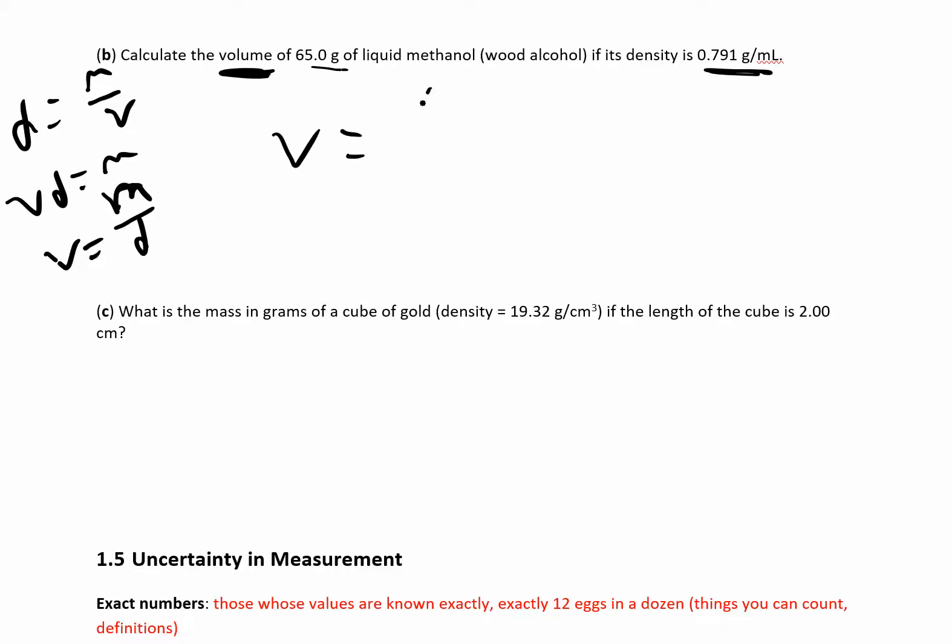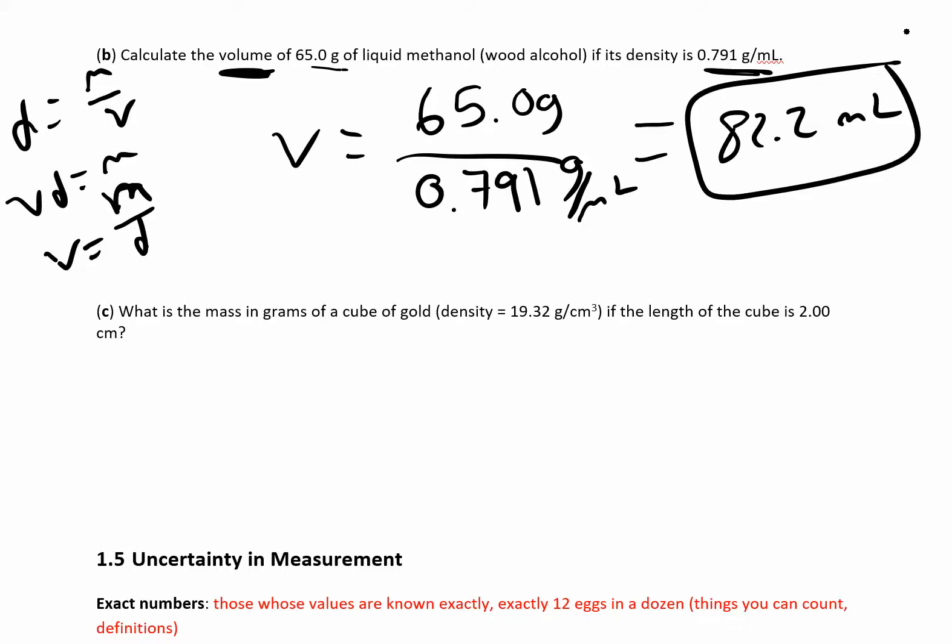So volume is just the mass, that's 65 over the density, 0.791 grams per milliliter. So you're going to end up with 82.2 milliliters. So be careful here because in some of the homework problems, these units don't match those units. So what if they give you density in grams per liter? And over here you have kilograms or something. You'd have to convert the kilograms to grams and then get grams per liter, whatever you have. So make sure these match. If this is in grams, this should be in grams per milliliter. And then your milliliters over here will be your final answer. So be careful with your units.